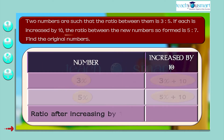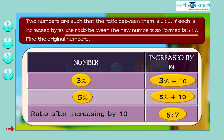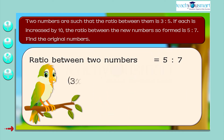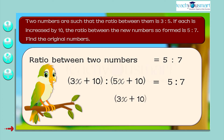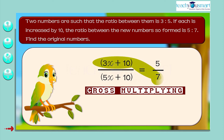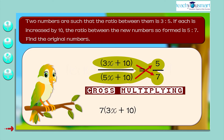Also given that the ratio between the new numbers is 5 is to 7. That is, 3x plus 10 is to 5x plus 10 equals 5 is to 7, or (3x + 10) divided by (5x + 10) equals 5 by 7. Cross-multiplying, we get 7 multiplied by (3x + 10) equals 5 multiplied by (5x + 10).